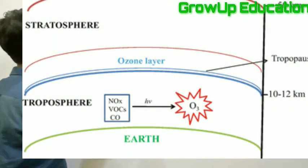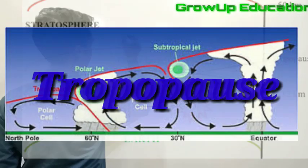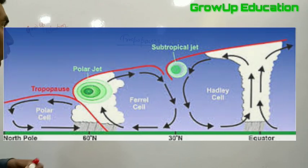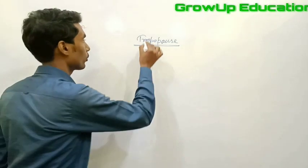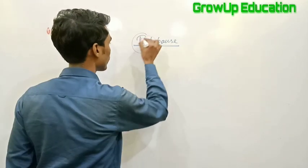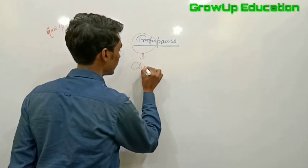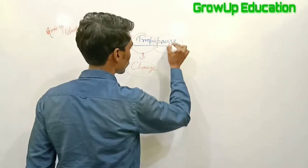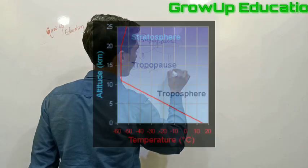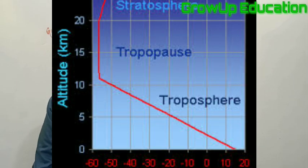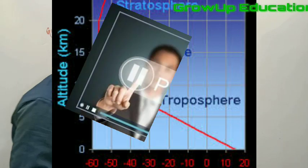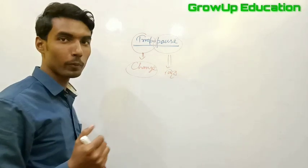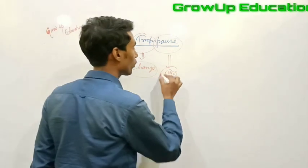The next step is to understand the name 'troposphere.' Troppo means change. What we call change, we call a post. So 'troppo' means change — that is the meaning of the prefix.